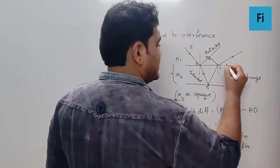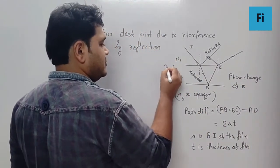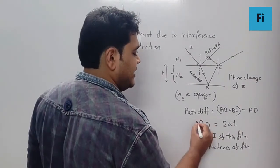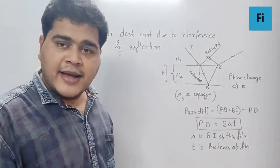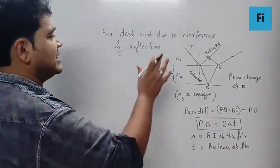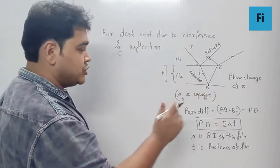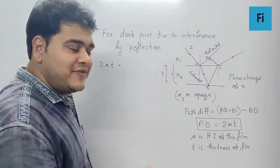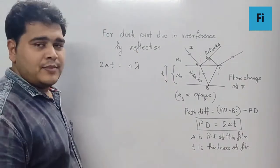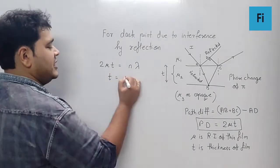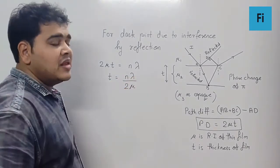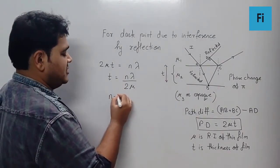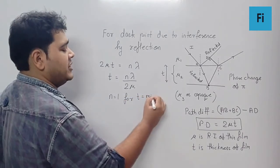So this is the general formula which we use for the path difference in case of reflection done by the thin film. Here, the interference is definitely by reflection, so I can say 2μt for a dark band by reflection, we have the formula as nλ. So t is going to be nλ/2μ. Since I want minimum thickness, we are going to put n as 1, so n equals 1 for t to be minimum.